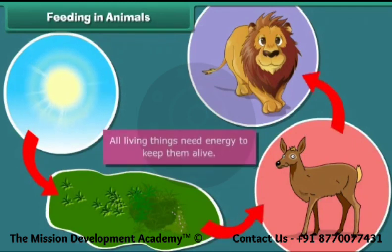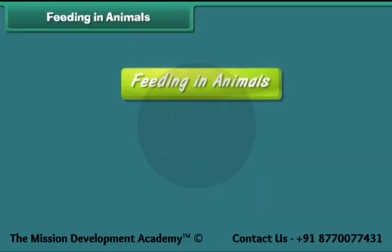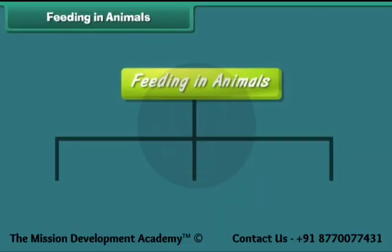Feeding in animals: as we all know, all living things need energy to keep them alive. They get this energy from food. On the basis of the type of food, animals are of three types: herbivorous, carnivorous, and omnivorous.